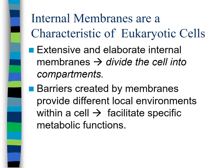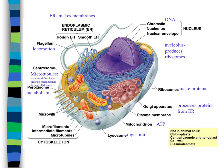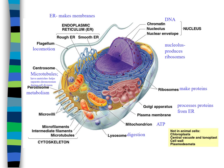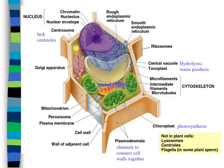The animal cell lacks chloroplasts, a large central vacuole, and a cell wall. It also lacks plasmodesmata. Here's a typical plant cell. Not all plant cells have all the parts — for example, a root cell would not have chloroplasts because it doesn't see any light. The plant cell is surrounded by a cell wall and lacks things that animal cells have, such as lysosomes and centrioles.